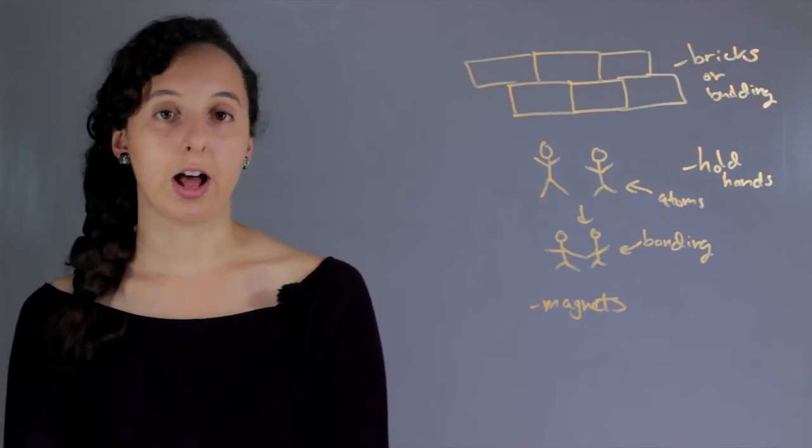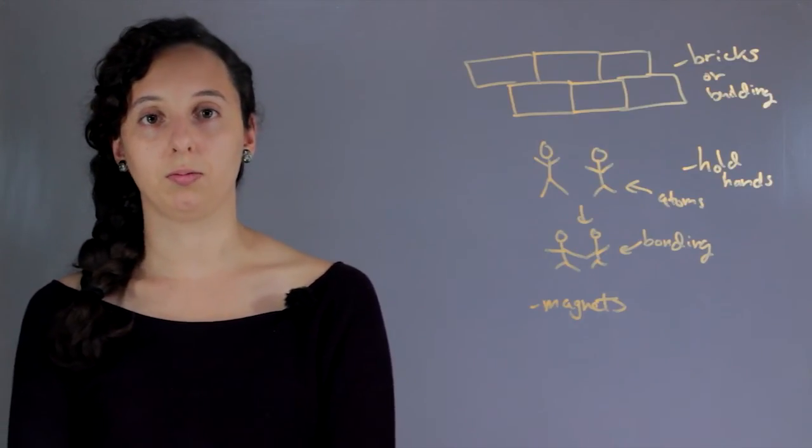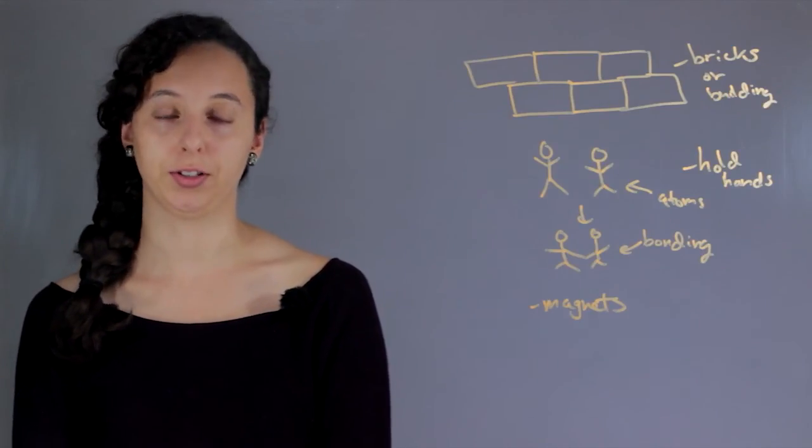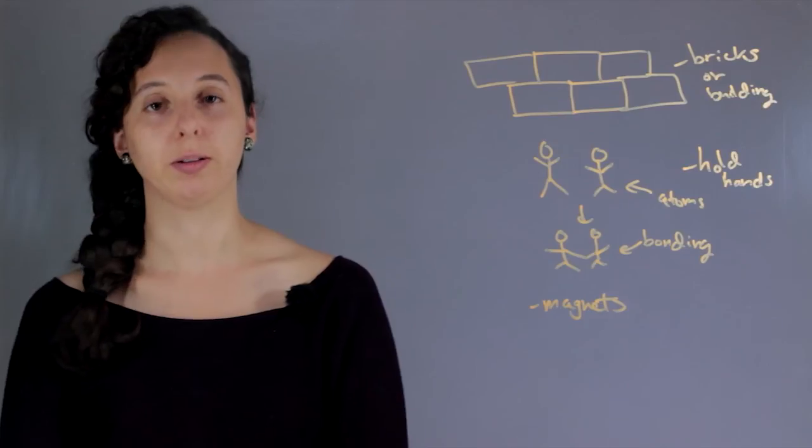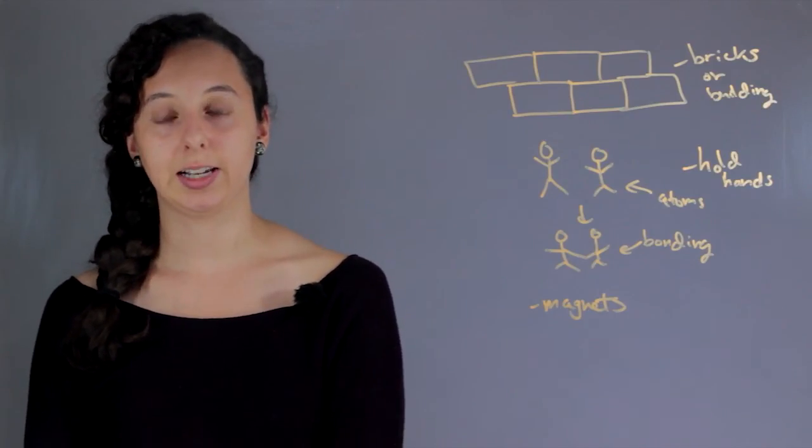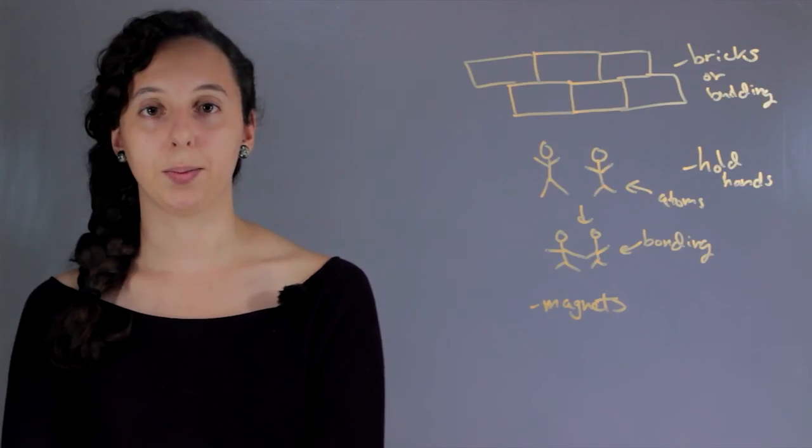So yeah, I would say start with these three analogies. And then also, I mean it's good that you're teaching your kids science, but it's probably not super necessary if they're that young, they'll be fine. The brick thing will be good enough. I'm Robin Higgins and this is how to explain atom bonding to kids.